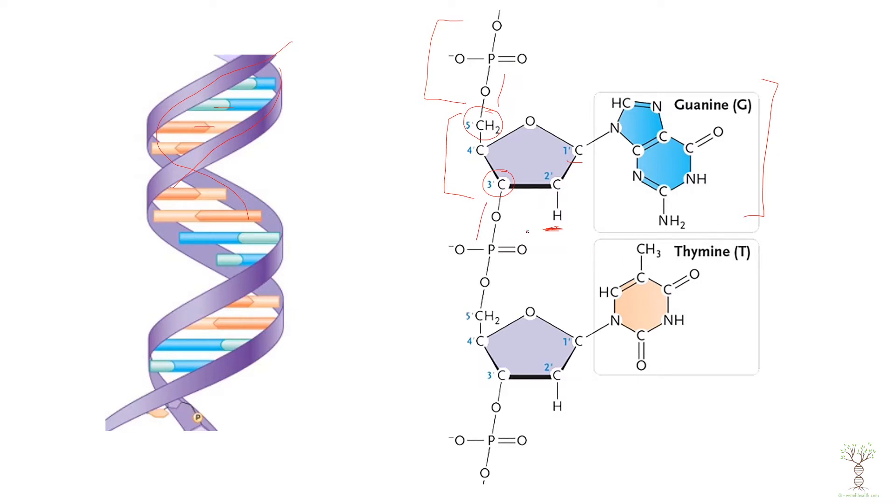This gives each nucleotide a direction, so each strand of DNA has a five prime end because the fifth carbon is attached to the phosphate and a three prime end because it is attached to the third carbon. So this forms our sugar phosphate backbone which is these purple ribbons here.